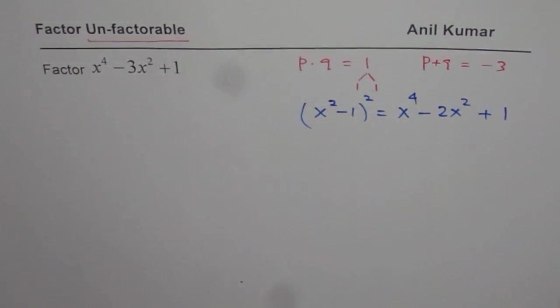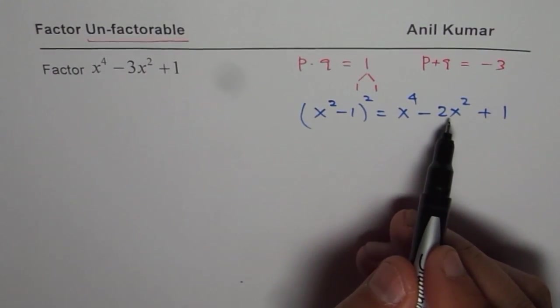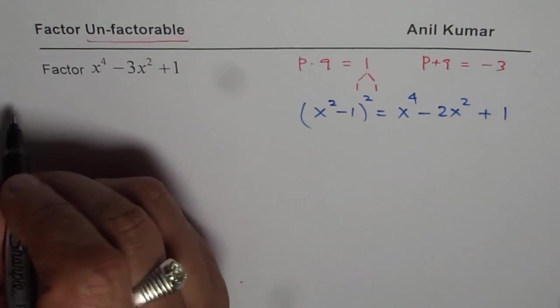So what we will do is we will write -2x^2 as a combination of -2x^2 and -x^2. See how.